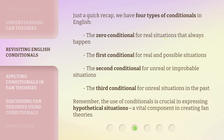Just a quick recap — we have four types of conditionals in English. The zero conditional for real situations that always happen. The first conditional for real and possible situations. The second conditional for unreal or improbable situations. The third conditional for unreal situations in the past. Remember, the use of conditionals is crucial in expressing hypothetical situations, a vital component in creating fan theories.